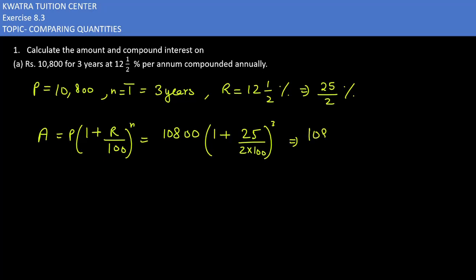Then you have 10,800. And 25 over 200 you can also reduce. 25 over 100 when cancelled will give you 4. So in bracket you have 1 plus 1 by 8 raised to power 3. So you have value as 10,800. And when you solve the LCM you will have 8 plus 1. 8 plus 1 is nothing but 9. 9 over 8 is raised to power 3.